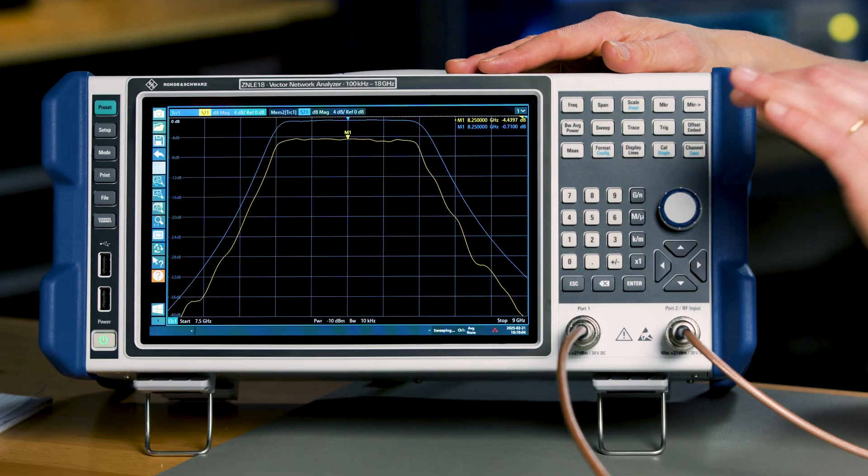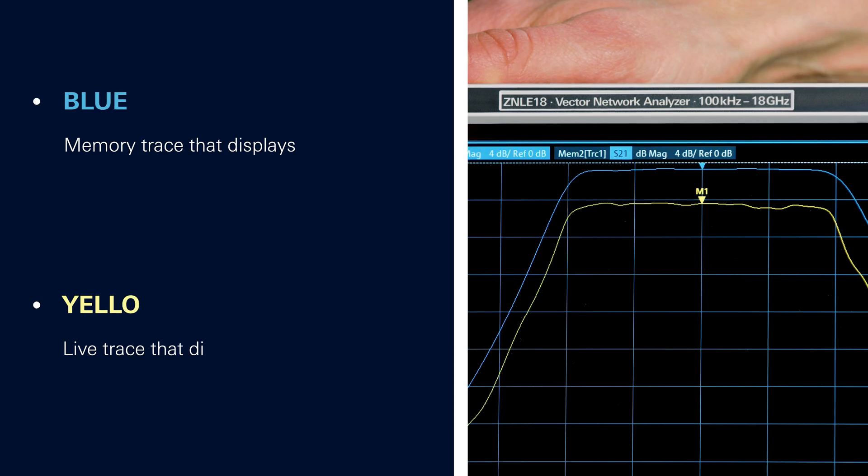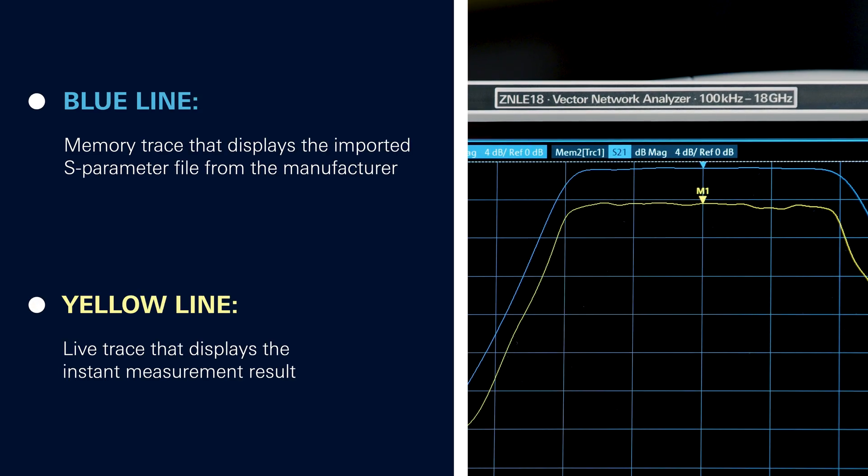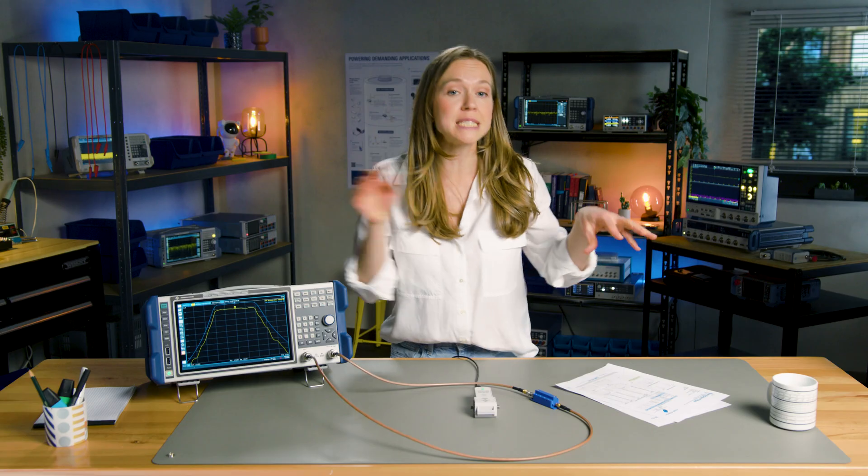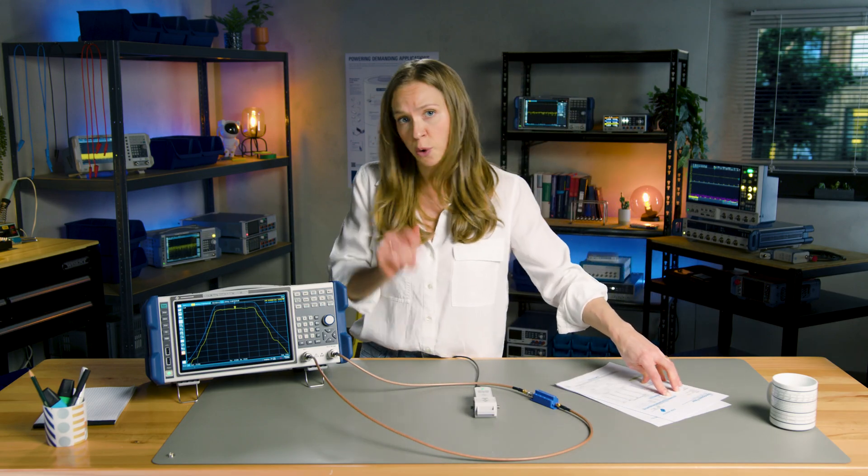Using the marker function, we can identify the peak response at 8.25 GHz. We can see a small difference in insertion loss. Our live trace shows approximately 4 dB compared to the data sheet's 0.6 dB. This difference is expected before calibration.